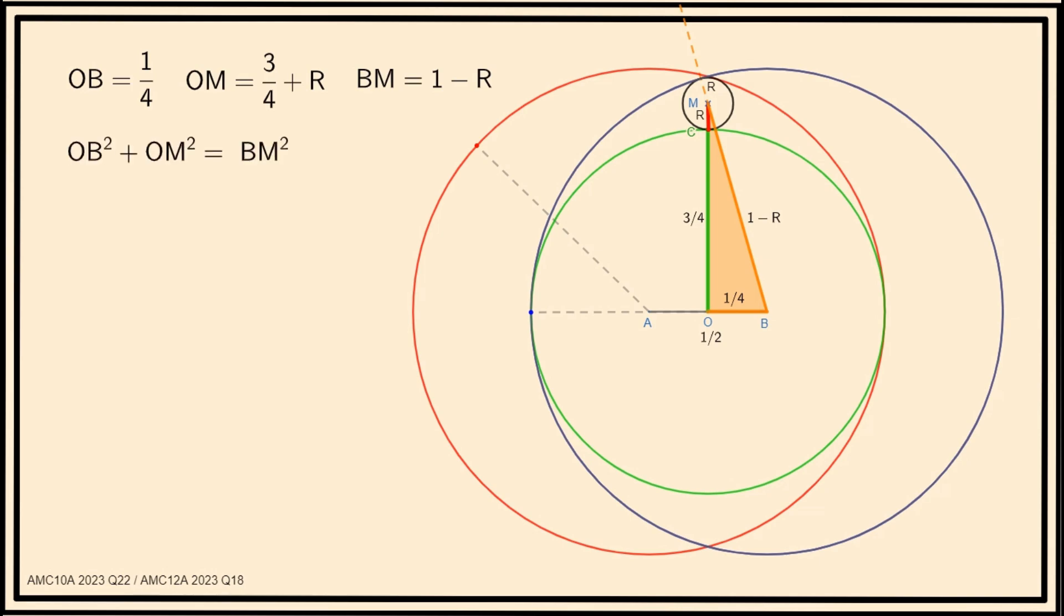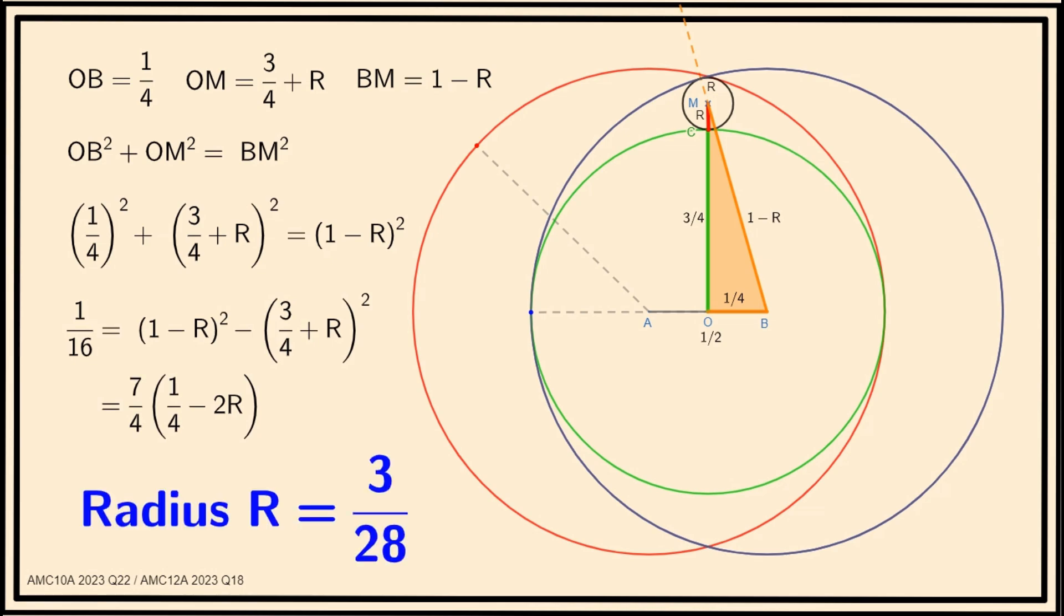Substituting the expressions, we get this equation. We can expand it or use difference of two squares to solve it. It is a simple exercise to conclude that the radius R is 3/28, and that is the answer.